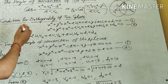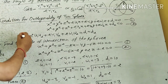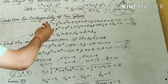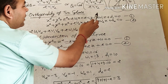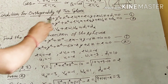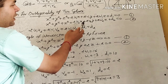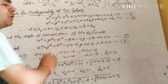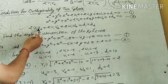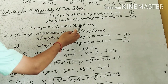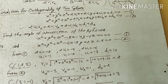Now, condition for orthogonality of 2 spheres. Two spheres are said to be orthogonal if they satisfy this condition. Let the equation of the 1st sphere be x² + y² + z² + 2U1·x + 2V1·y + 2W1·z + D1 = 0, and the 2nd sphere be x² + y² + z² + 2U2·x + 2V2·y + 2W2·z + D2 = 0. Then the condition for orthogonality is: 2U1U2 + 2V1V2 + 2W1W2 = D1 + D2. If both spheres satisfy this condition, they will be orthogonal, otherwise not.